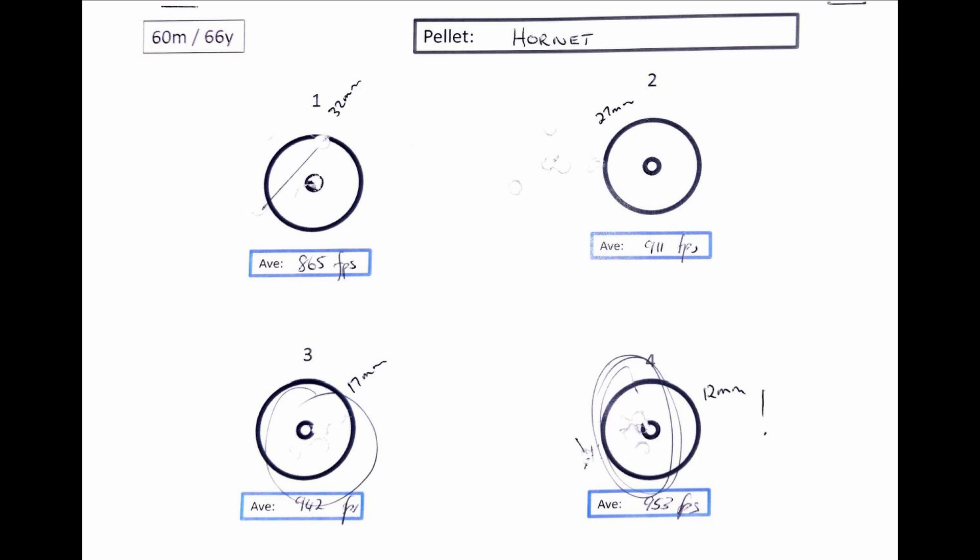With a 17 millimeter grouping at 942 feet per second, and with a bit of imagination, a 12 millimeter grouping at the maximum power of 953 feet per second. I think they deserve applause.